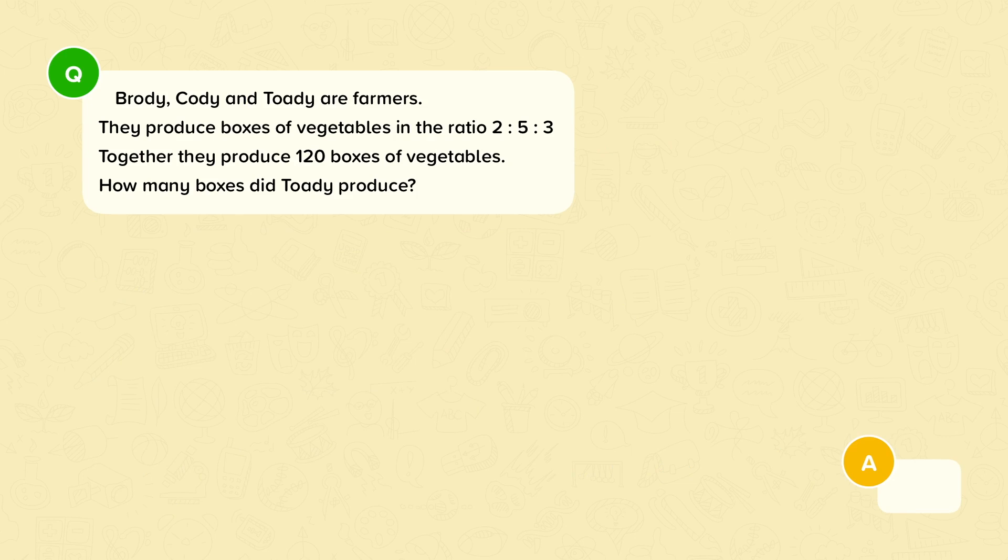Here's one last question to try. Brodie, Cody and Toady are farmers. They produce boxes of vegetables in the ratio two to five to three. Together, they produce 120 boxes of vegetables. How many boxes did Toady produce? You might want to pause the video and give this a go.